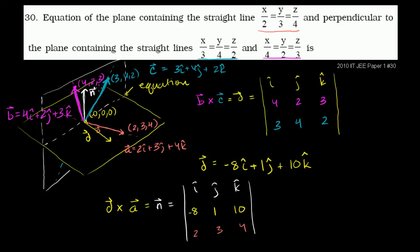Where we had left off, we used the information from these two lines to figure out two vectors — two position vectors lying in this white plane. We took their cross product to find a vector that's perpendicular, that's normal to this entire white plane. And that was vector d.